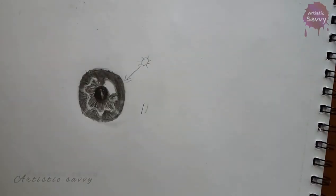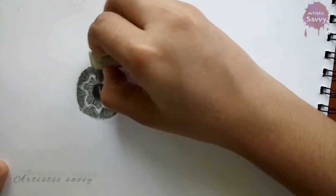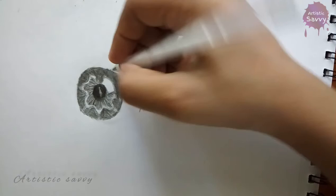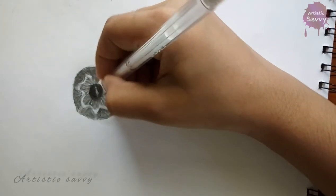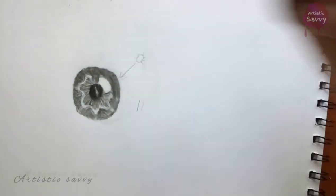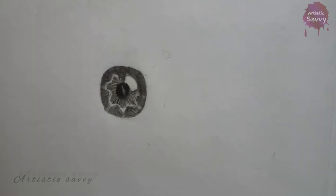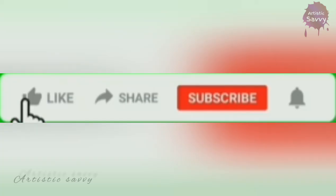Now I'm blending that and erasing the highlights. Now I'm using a white gel roll pen to fill it inside. If you don't have this, you can also use a correction pen.